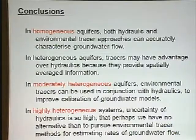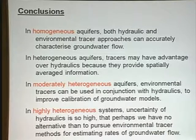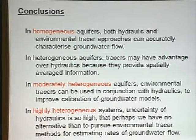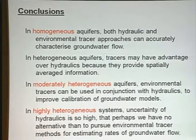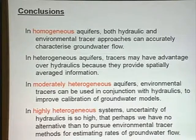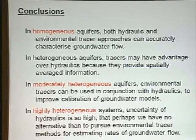So, just to conclude: in homogeneous aquifers, we can use hydraulics, we can do Darcy's law calculations to estimate fluxes, and we can also use traces — and in homogeneous systems they both give us the same results. But we know there aren't many homogeneous aquifers. In heterogeneous systems, traces have an advantage when we want to know about average flow rates because they have a very large spatial footprint. And in moderately heterogeneous aquifers, we can really benefit if we combine traces and hydraulics to get a much better representation of the flow system and a much more accurate prediction.